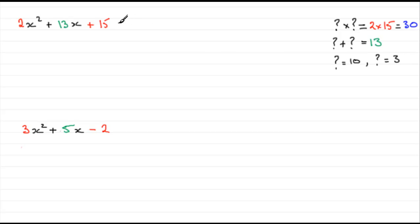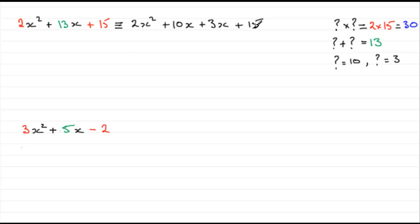Now how do we use these? We say that this is identical to — I'd encourage you to use an identical sign rather than an equal sign here. Write down the first term, two x squared, and then instead of the thirteen x we take the two numbers ten and three and put x's by them: ten x and three x. Don't worry if you write these two the other way round — it won't make any difference to the final answer. We've got fifteen on the end, so write that fifteen on. Now factorize the first pair by pulling out a common factor of two x.